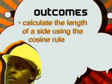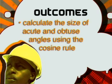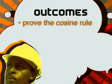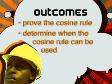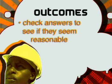By the end of the lesson, you should be able to calculate the length of a side using the cosine rule, calculate the size of acute and obtuse angles using the cosine rule, prove the cosine rule, determine when the cosine rule can be used, and check your answers to see if they seem reasonable.